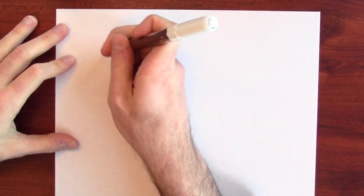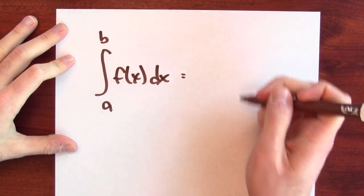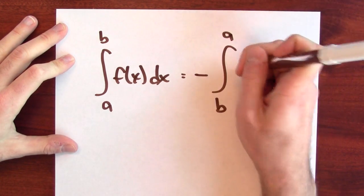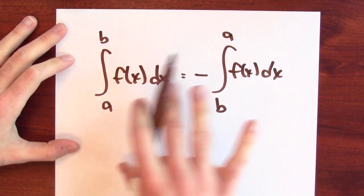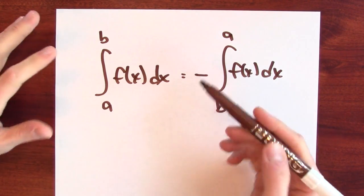This fact coheres with a certain convention about integration. The convention that we use is that if we integrate from a to b, the function f of x dx, that's negative the integral from b to a of f of x dx. So if you integrate the wrong way, so to speak, we want to count that as negative area.